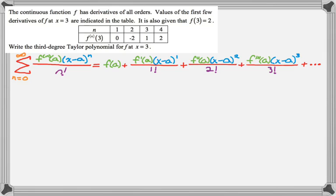Okay, so f of x is approximately, since it's not the series, it's just a polynomial, it's only approximately equal to this. And then we just fill in. So f of 3 is 2, that's given up there. And then plus 0 from the table. And then x minus 3 to the first over 1 factorial. I always write that in just to make sure I can carry out the pattern.